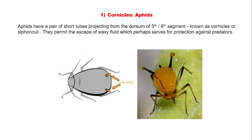Cornicles in aphids: a pair of short tube-like structures projecting from the fifth or sixth abdominal segment of aphids are known as cornicles. These cornicles secrete a waxy fluid and help in protection against predators.